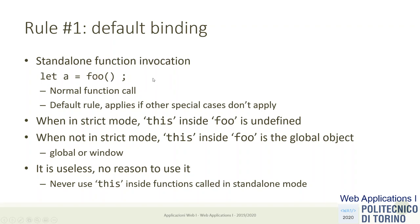If the function foo tries to access 'this', it will get an undefined value in strict mode. In non-strict mode it would get a reference to the global object — window or global in Node — but since we work in strict mode, this is useless. Functions designed to be called normally should not use 'this' because it doesn't have any meaningful value.